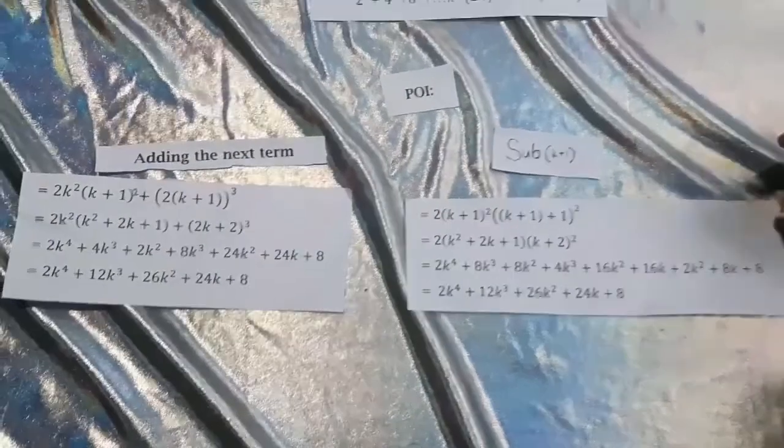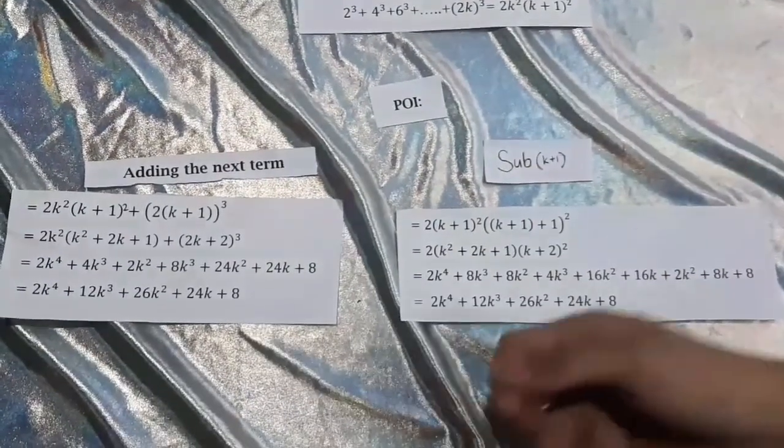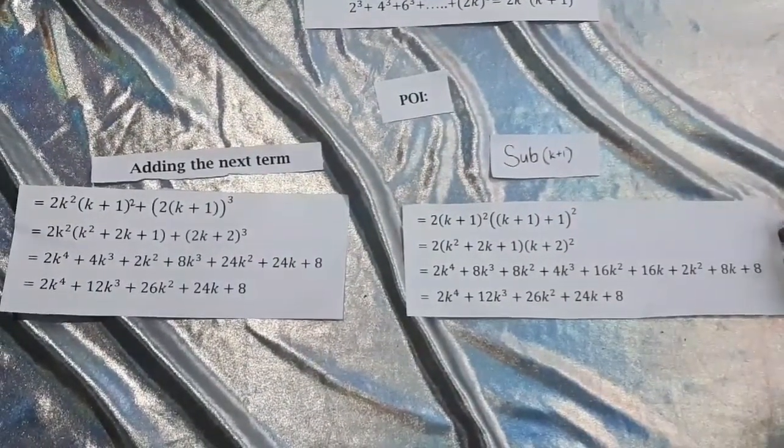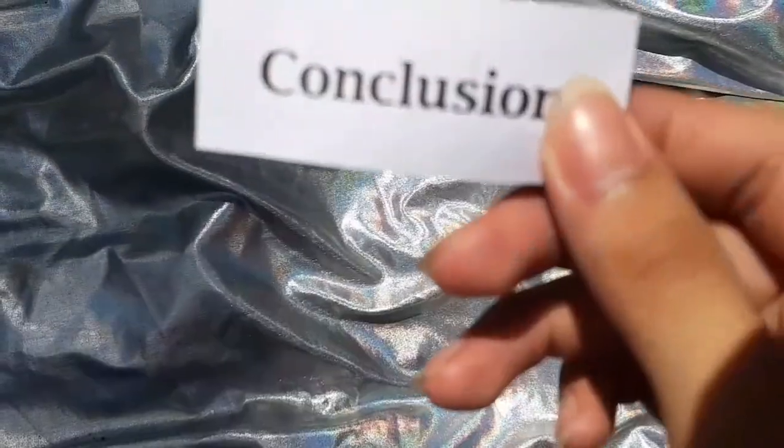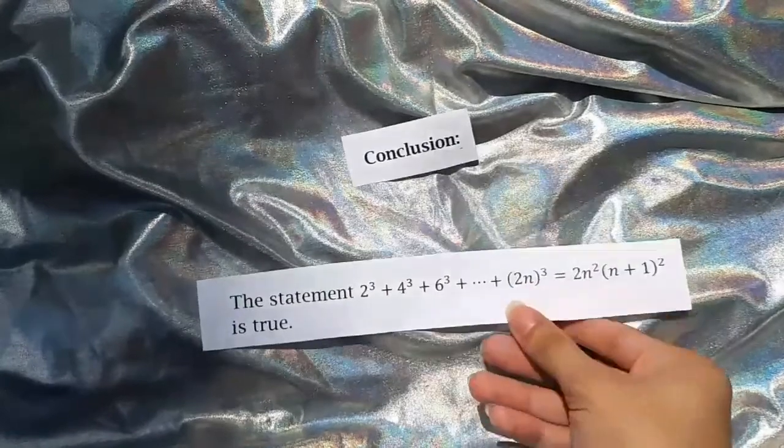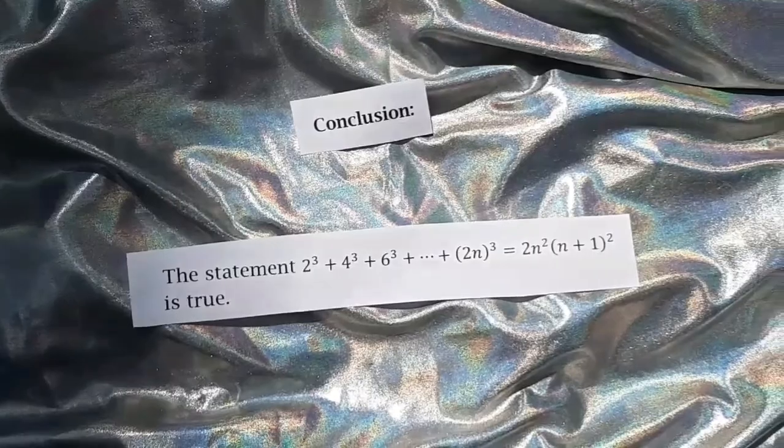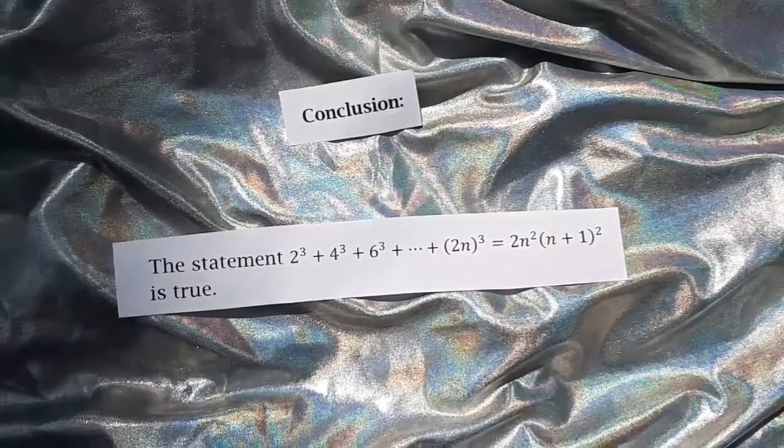See, the two derived values in adding the next term and substituting k are equal, which now can lead to the fourth step, which is called conclusion. We have now proven the statement 2³ + 4³ + 6³ + ... + (2n)³ = 2n²(n + 1)² is true. That would be all for our video. We hope that this video will help you with your math. Please subscribe to our channel and hit that like button. Thank you for watching. Bye!